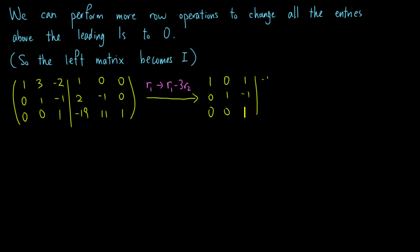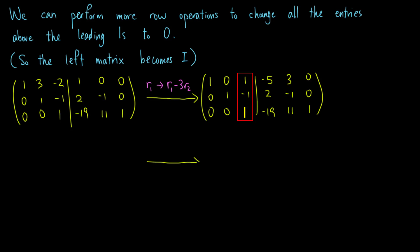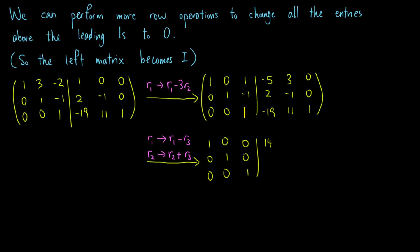It remains to make the entries above the leading one in the third row to 0. We do so by subtracting the third row from the first row, and adding the third row to the second row. We obtain this augmented matrix.